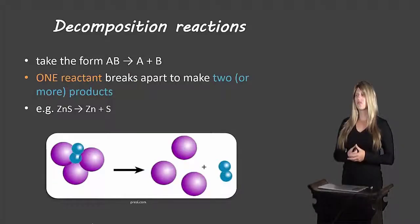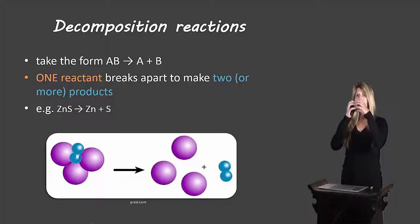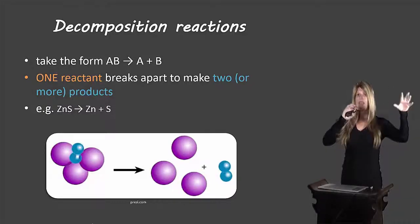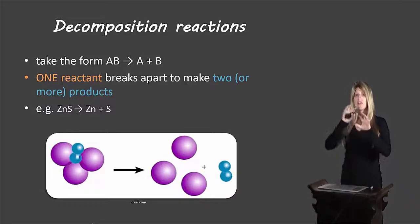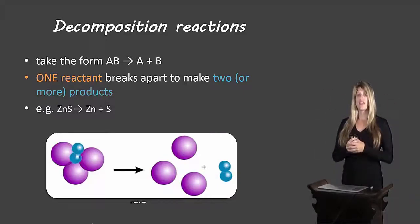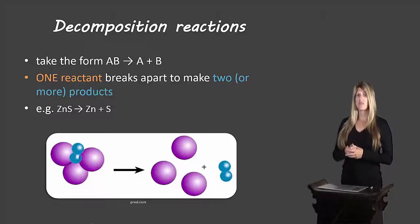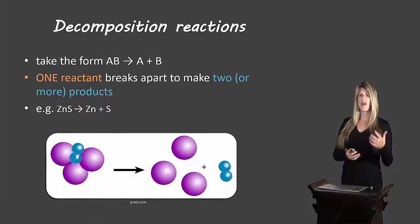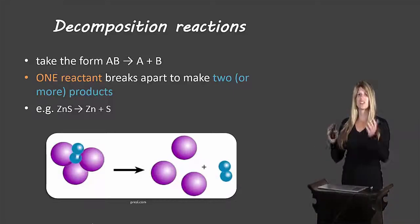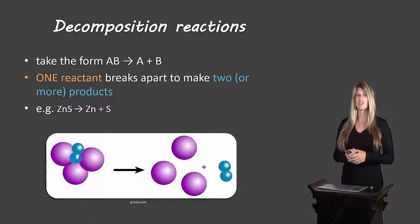Now let's look at decomposition reactions. They take the form AB — one compound breaking apart into A and B. You start with one reactant and it breaks into multiple different products. The key for identifying a decomposition reaction is to look at the reactant side; if there is only one reactant, you're dealing with a decomposition reaction. The example shown is zinc sulfide breaking apart into zinc and sulfur — the exact flip of the synthesis reaction.